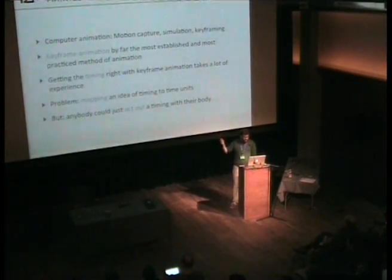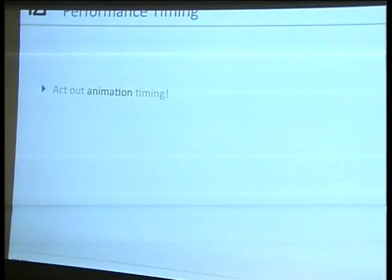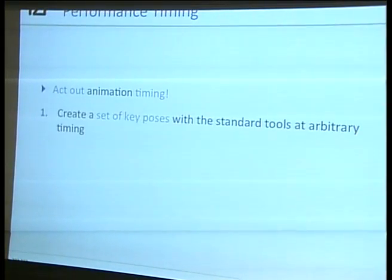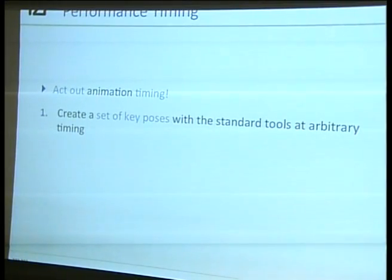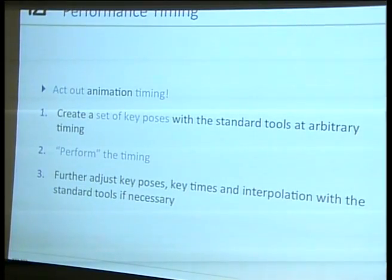I want to get this acting out back into animation — this real-time liveness. I'm not the first one; I'm building on prior work here. For quite a while there's been an idea called performance timing. The proposals say you act out the animation timing, and the workflow is: you create your key poses with the standard tools, but you don't worry too much about the timing — you just space them arbitrarily in time. Then you perform the timing. After you've performed, you can still adjust the keyframes spatially and temporally with the standard tools if you desire.